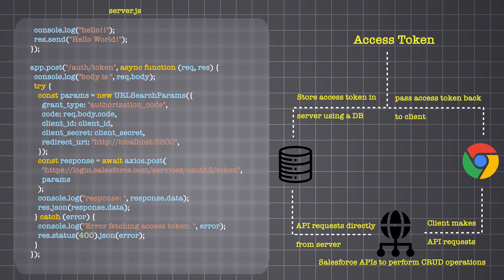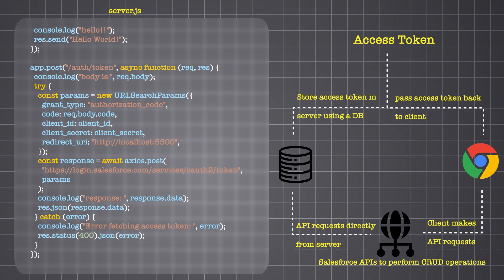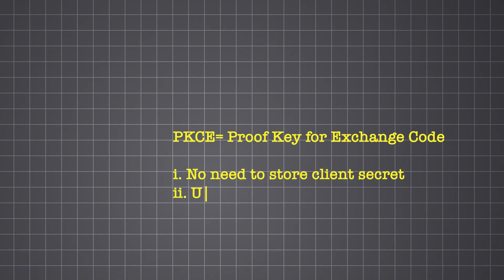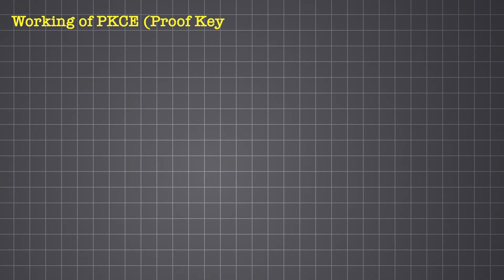That's exactly where PKCE — Proof Key for Code Exchange — comes in. It allows us to securely perform the OAuth flow without needing to store or transmit the client secret, by using a code challenge and code verifier. Let's see how PKCE works. In the PKCE-enhanced web server flow, the core security mechanism lies in the relationship between two values: the code verifier and the code challenge.